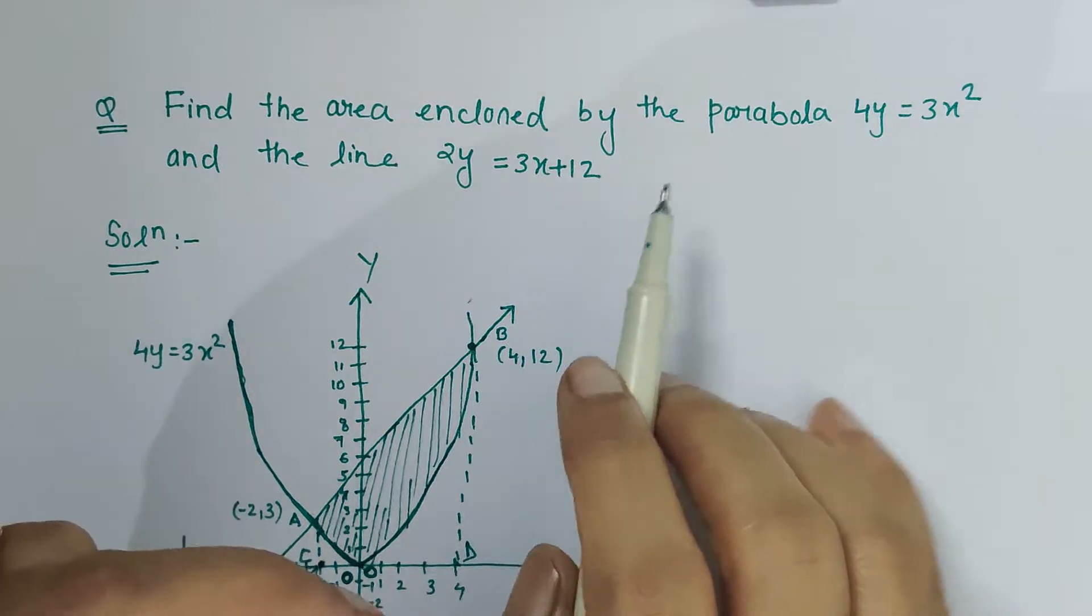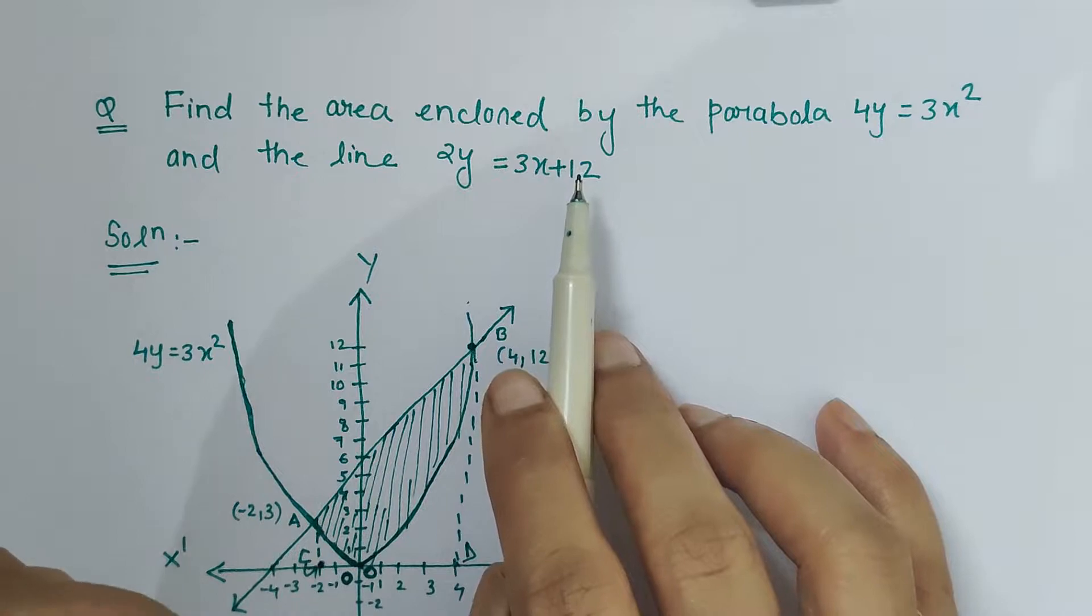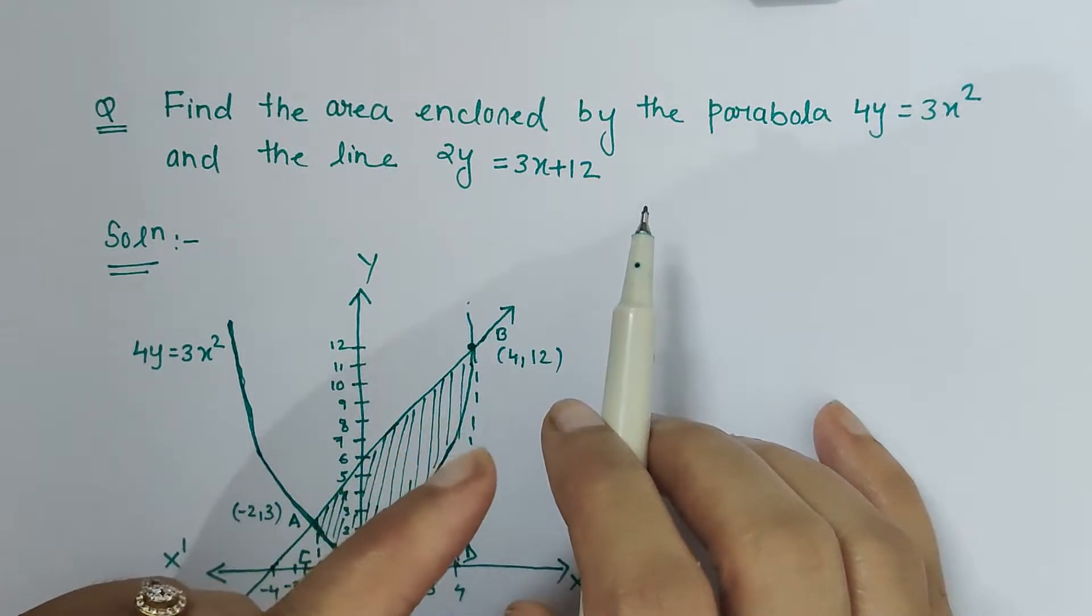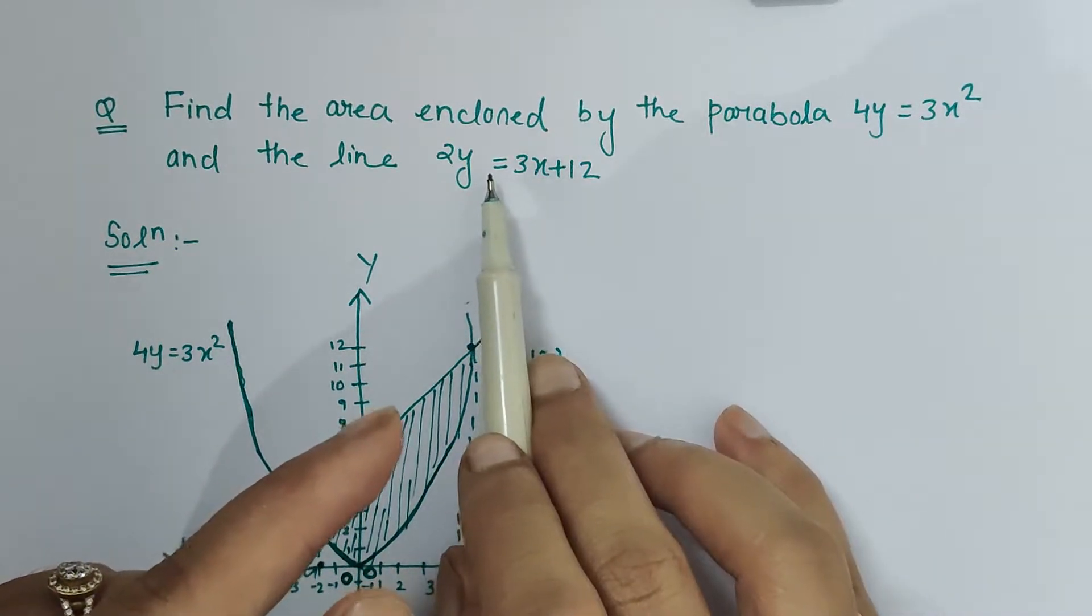After plotting the graph for individual curves, it is very important to find the point of intersection. The point of intersection can easily be obtained by putting the y value from one equation in the other equation and similarly the x value in the other equation. That gives y and x coordinates which are the common points.